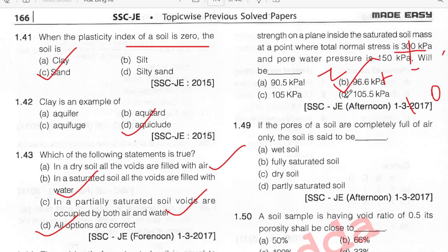If the pores of a soil are completely full of air, the soil is dry soil. Option C.